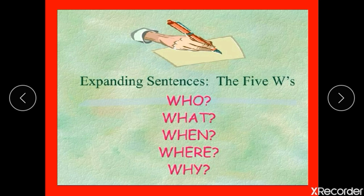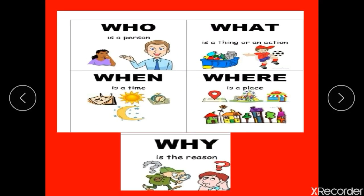Let's see how to use WH questions. If the question asks who, the answer must be a person. If the question asks what, the answer must be a thing or an action. If the question asks when, the answer must be a time. If the question asks where, the answer must be a place. If the question asks why, the answer must be the reason.